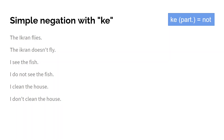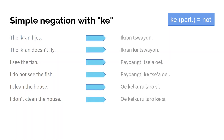In Na'vi these become the following. You should already be familiar with the simple non-negated sentences. So 'the ikran flies' is 'ikran zwayon.' To negate the sentence I just put the 'ke' in front of the verb — in this case 'zwayon,' as 'zwayon' is the verb meaning 'to fly.' So 'ikran zwayon' becomes 'ikran ke zwayon.'